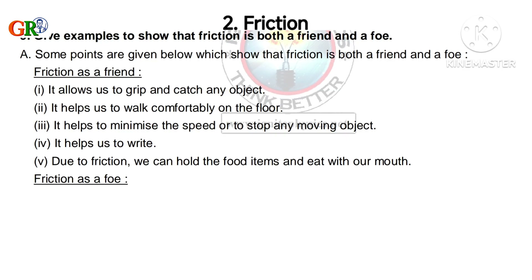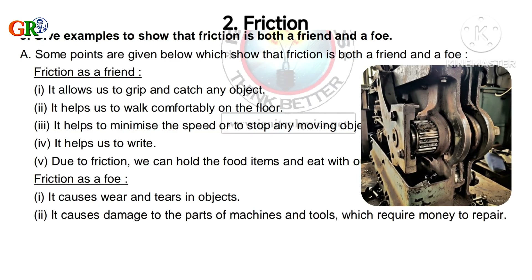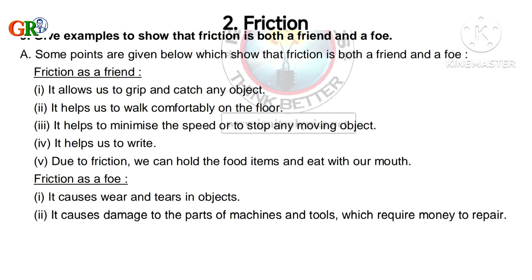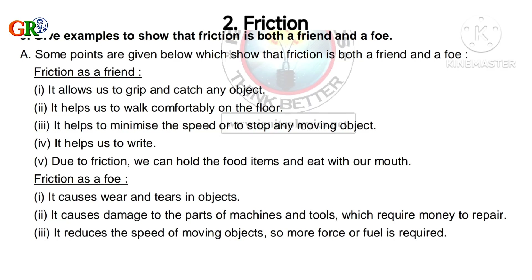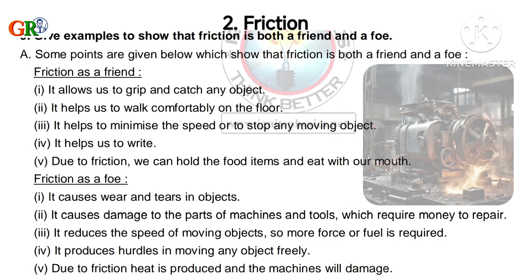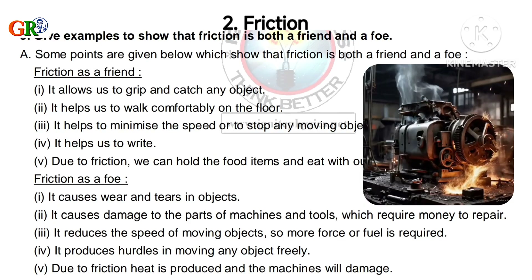Now, friction as a foe — foe means enemy. It causes tears in objects; it causes damage to parts of machines and tools which require money to repair; it reduces the speed of moving objects, so more force or fuel is required; it produces hurdles in moving any object freely; and due to heavy friction, heat is produced and machines get damaged.